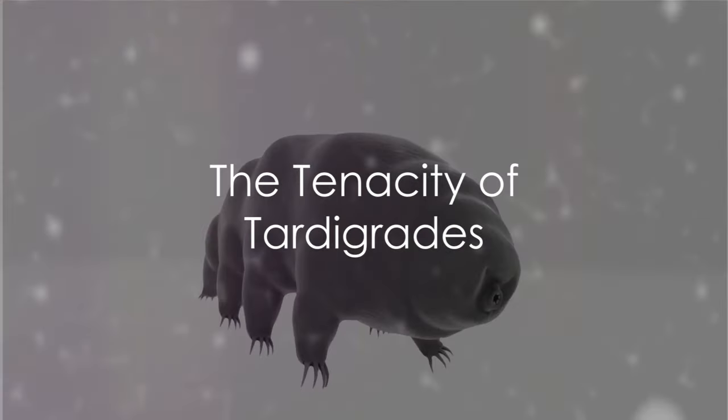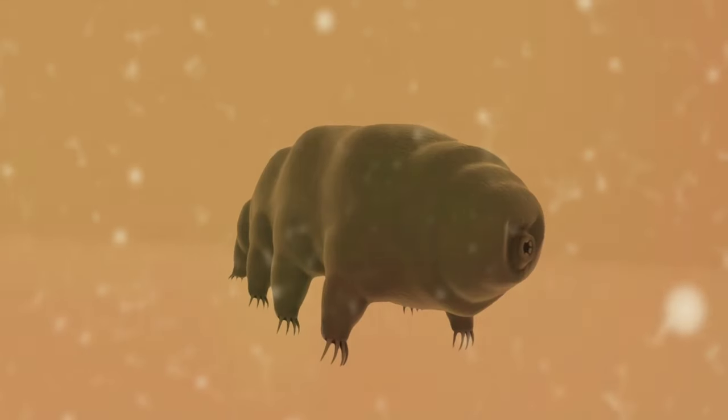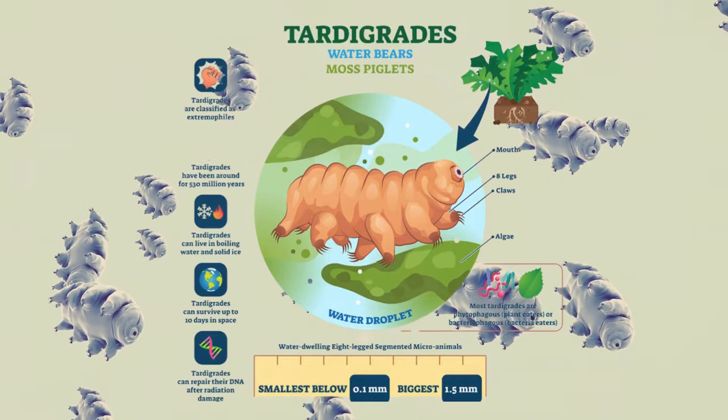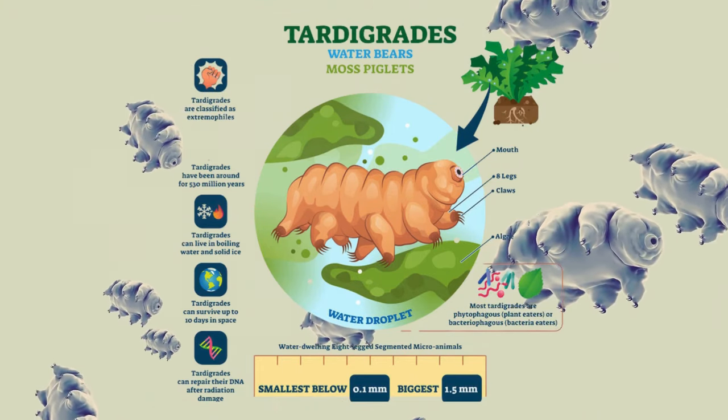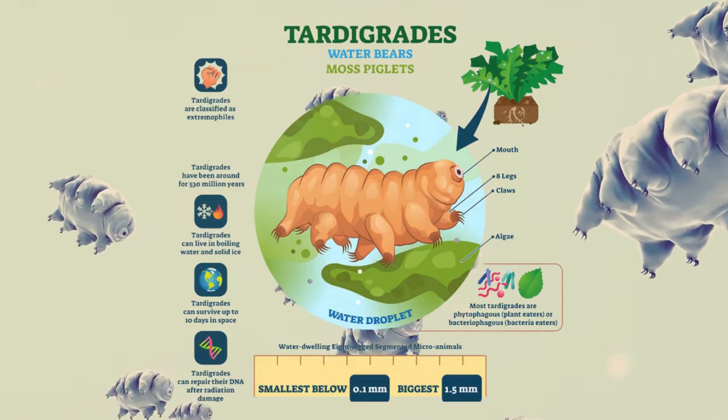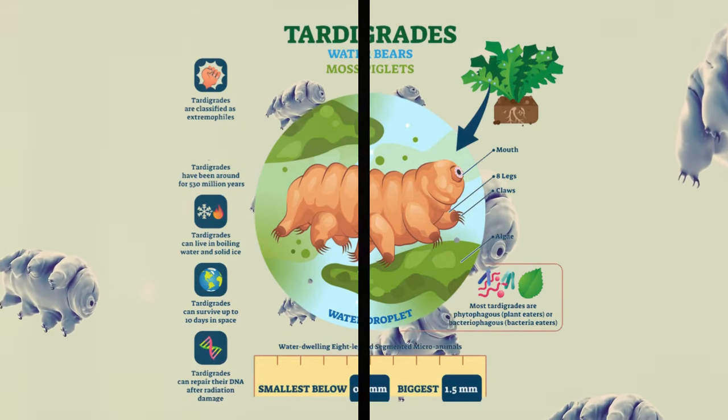Finally, meet the tardigrades, microscopic creatures that are virtually indestructible. They can survive extreme temperatures, pressures, radiation, and even the vacuum of space. They are a testament to life's tenacity and adaptability.